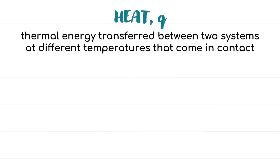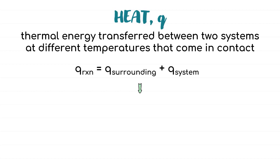Heat, denoted by small letter Q, is defined as thermal energy transferred between two systems at different temperatures that come in contact. The equation describing heat flowing between a system and its surroundings is Q_reactions = Q_surrounding + Q_system. The heat exchange in a calorimeter should not be lost to the surroundings; therefore we have the relationship Q_surrounding + Q_system = 0.